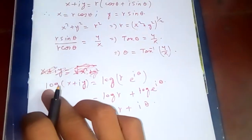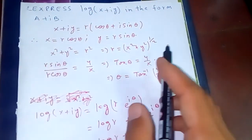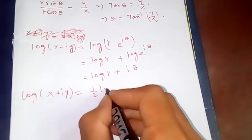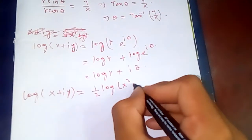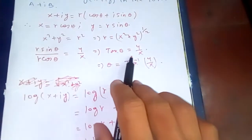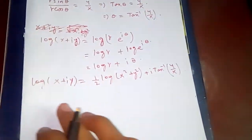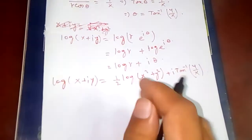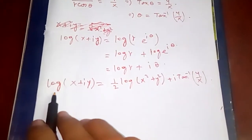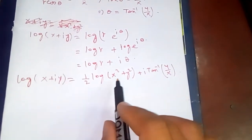So log(x + iy) = log r + iθ. Now, log r = log(x² + y²)^(1/2) = ½ log(x² + y²), using the log power rule. And θ = tan⁻¹(y/x). Therefore log(x + iy) = ½ log(x² + y²) + i·tan⁻¹(y/x). This is our answer in the form a + ib, where the real part is ½ log(x² + y²) and the imaginary part is tan⁻¹(y/x).